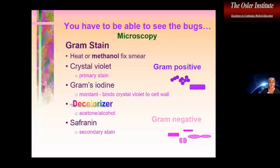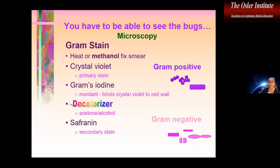Safranin is usually used as the counterstain, although carbolfuchsin can be used as well. With the primary stain, gram-positive organisms — those with a thick peptidoglycan cell wall — absorb the crystal violet and iodine and are not decolorized. Gram-negative organisms, which have a very thin peptidoglycan layer, have the crystal violet washed away by the decolorizer along with lipids, and are then stained with the secondary stain — that's how we get our differential stain.